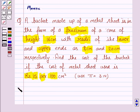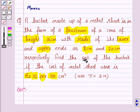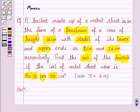So let's now move on to the solution. We are given that the bucket is in the form of a frustum of a cone. We have to find the cost of the bucket. If we are able to find out how much metal sheet is used to make that bucket, we can find the cost, because we know the cost of the metal sheet. So our motive is to find the area of the metal sheet used to make the bucket.